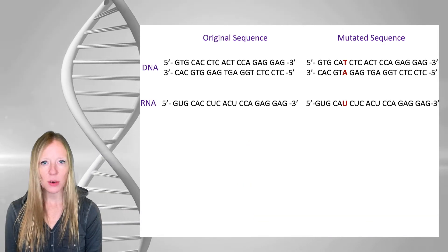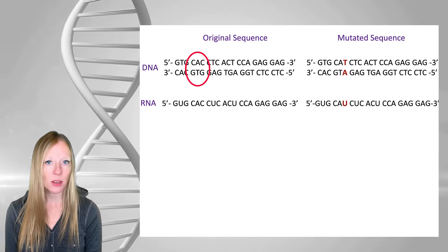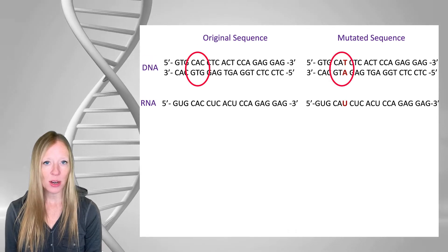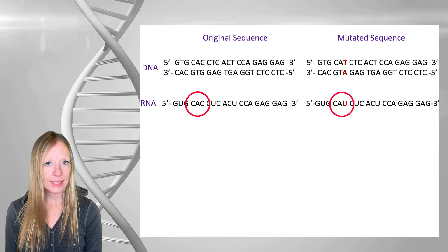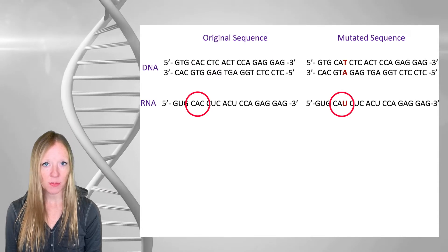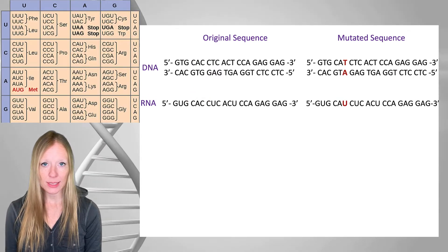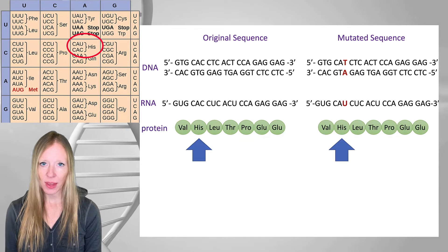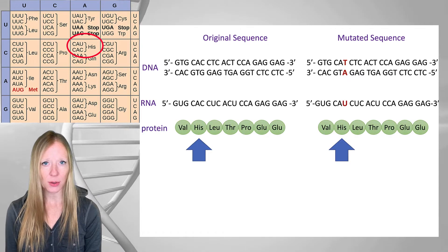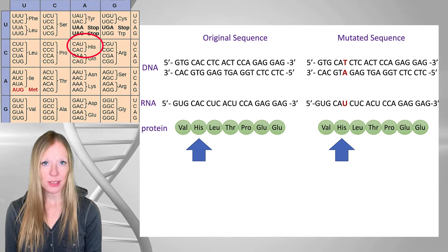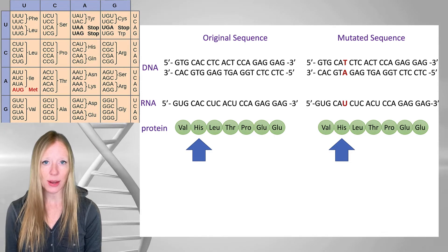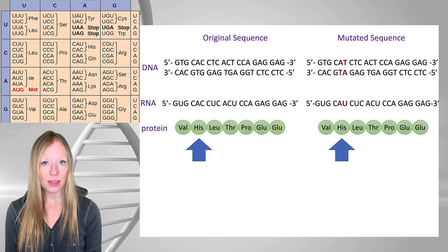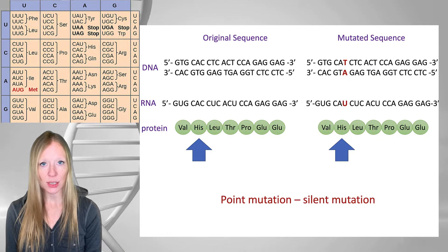Our original sequence for this codon was GTG, and the mutated codon is GTA. That means that the mRNA will be CAC originally, and CAU after the mutation. Looking at our codon table, CAC specifies histidine. The mutated codon CAU also specifies histidine, so there's no change to the amino acid sequence of our protein. We'll call this a silent mutation — it's a point mutation, and it's silent.